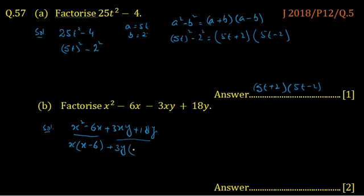We take 3y as common and the remaining is x plus 6. 6 is 18, so we must take 6 and bracket close.